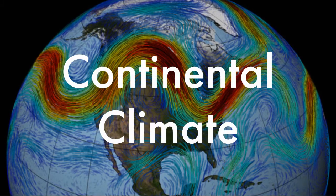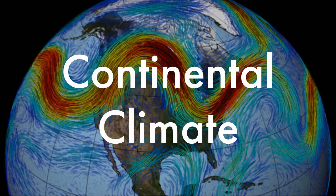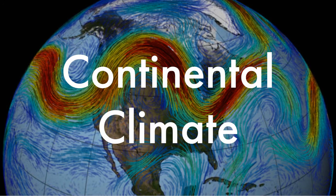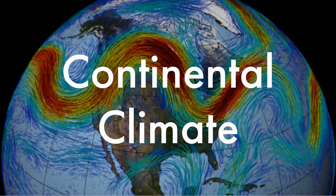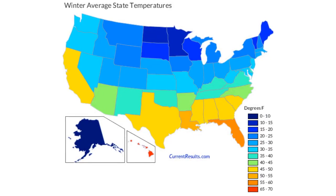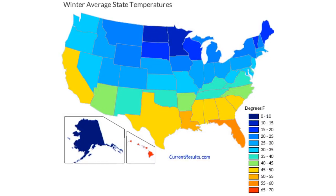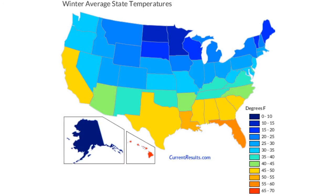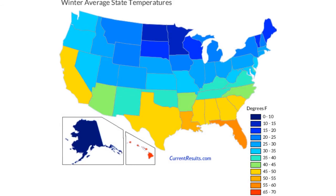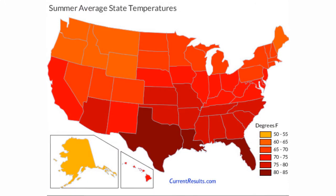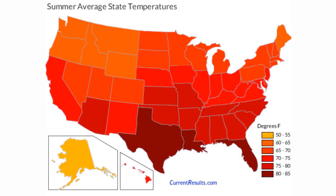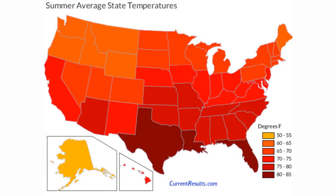The United States in general has a continental climate, meaning that most parts of our country are cold in the winter and hot in the summer. Not all parts of our country are like this though. The United States has a few different climates depending on where you are. As we can see in this picture, the northern parts of the US get much colder in the winter than some states in the south, and it's just the opposite extreme in the summer — southern states have much hotter summers than those in the north.